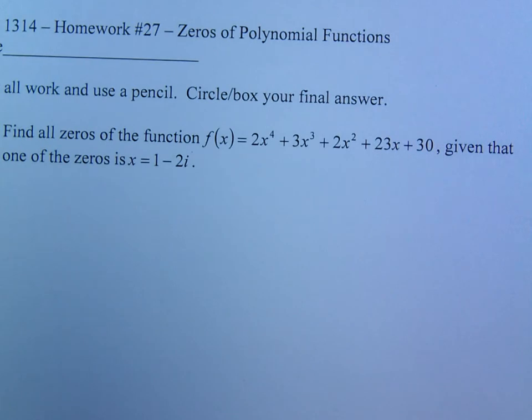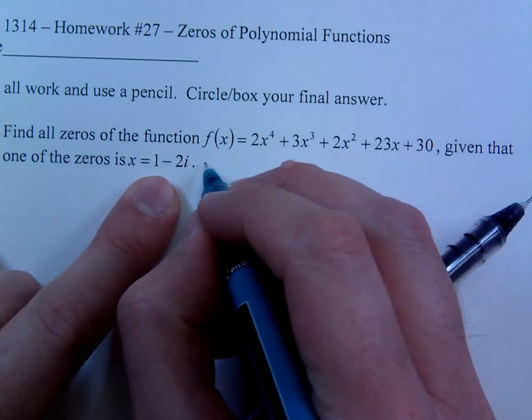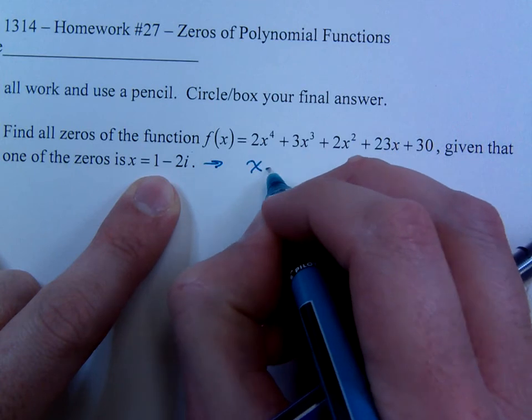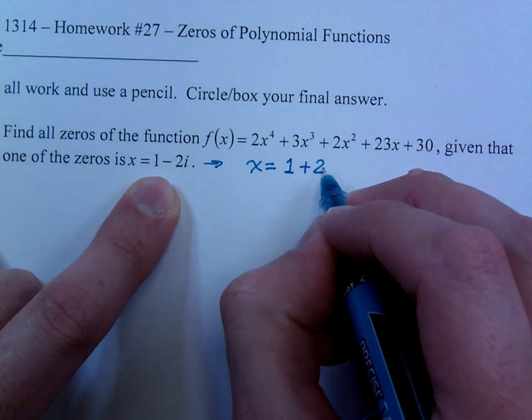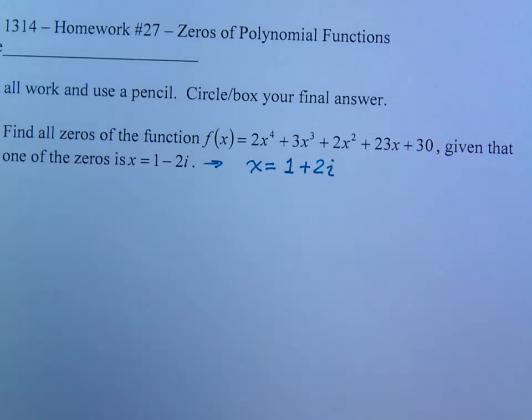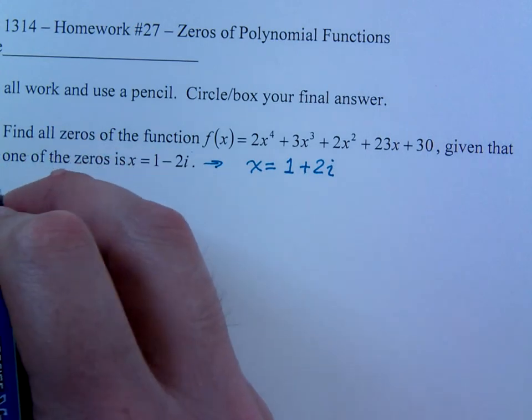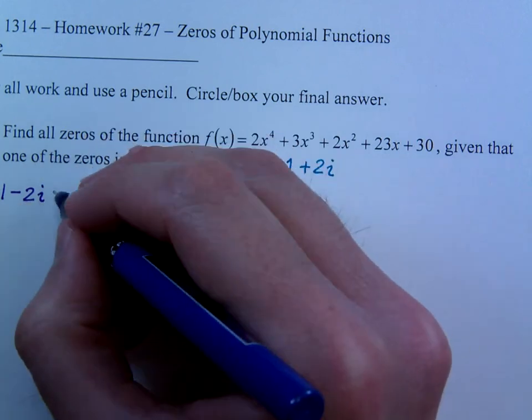That's right, whisper it Jessica. If one of the zeros is complex, that means that x equals what is also a solution? 1 plus 2i. That's right, because complex zeros occur in conjugate pairs. Good job. Yeah, so your k value here is 1 minus 2i. Yeah, go back to doing your own work now.